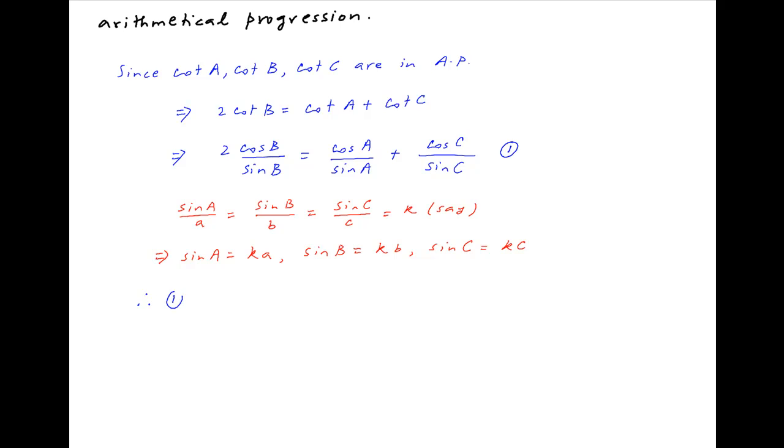Substituting these results in equation 1 above, and also replacing cos B with a square plus c square minus b square upon 2ac, cos A with b square plus c square minus a square upon 2bc, and cos C with a square plus b square minus c square upon 2ab.